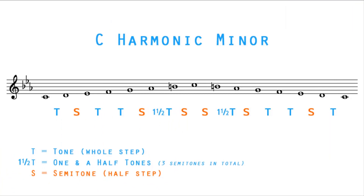Here's the ordering of tones and semitones for the harmonic minor: tone, semitone, tone, tone, semitone, and then watch out for this one — one and a half tones, followed by a semitone. This will be exactly the same for every harmonic minor in every key.